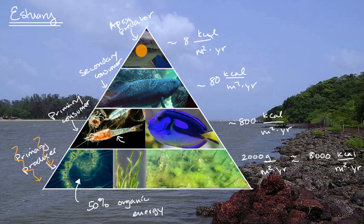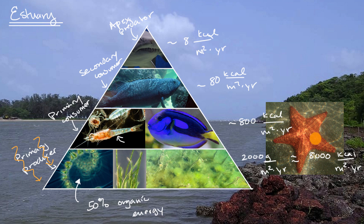We're not even done, because even apex predators at some point are going to die. They have tissue, and in that biomass there's energy that could be consumed by others, and nutrients that could be used by the initial primary producers. That's where things like detritivores come in — this is a starfish, which is a detritivore — things that can consume dead matter. They are really useful because they can bring nutrients back to primary producers and others.